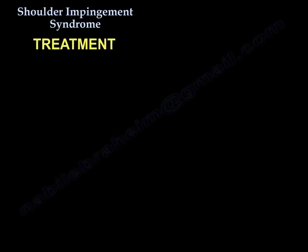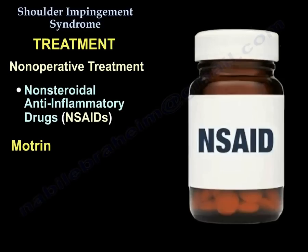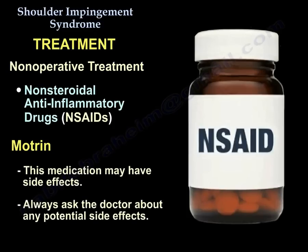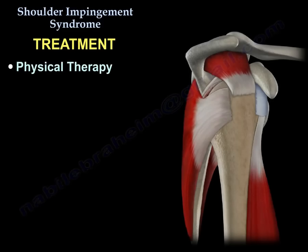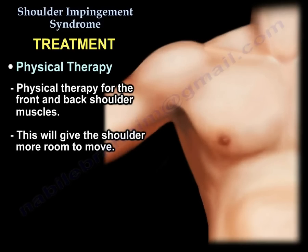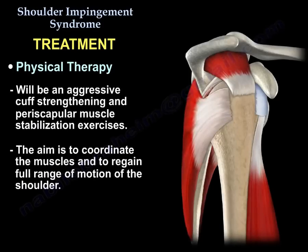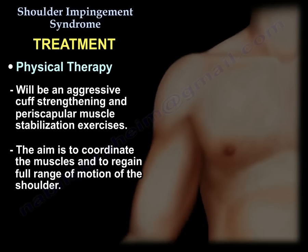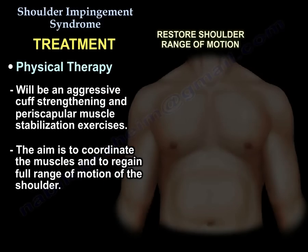Now for treatment. Treatment starts with non-operative management. We begin with Motrin or non-steroidal anti-inflammatory medications — always ask the doctor about side effects of any medication. Then physiotherapy for the front and back muscles of the shoulder to give more room for movement. Physiotherapy involves aggressive cuff strengthening and periscapular muscle stabilization exercises, with the aim of coordinating the muscles and regaining full range of motion.